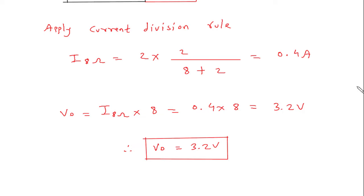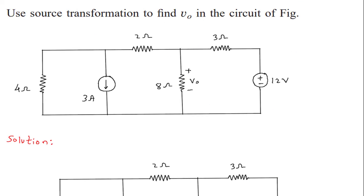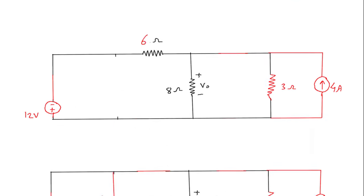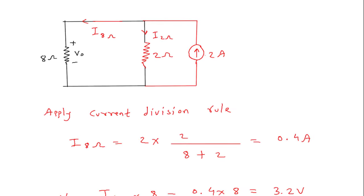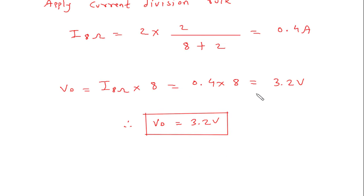What we had to find: we had to find Vo using source transformation. So this is Vo using source transformation. For electrical and electronics engineering related questions and answers, visit the link in the description below.